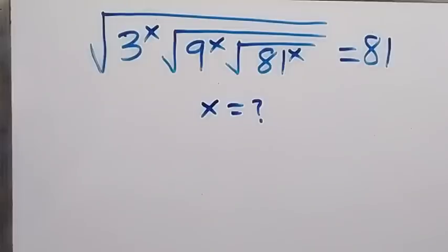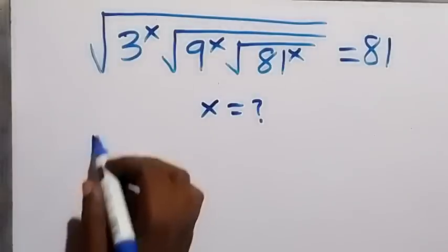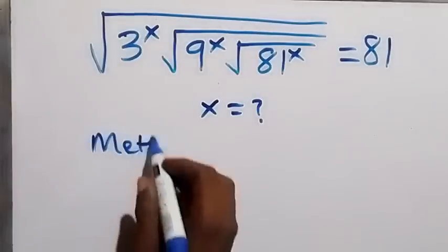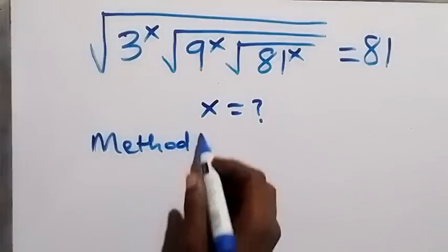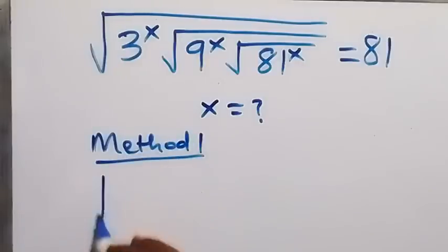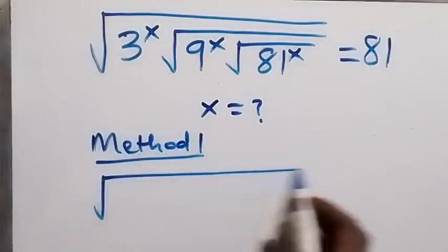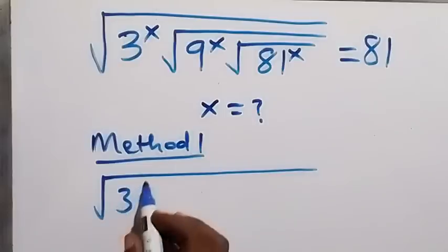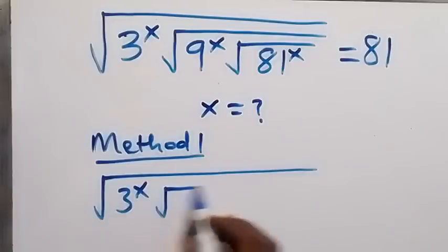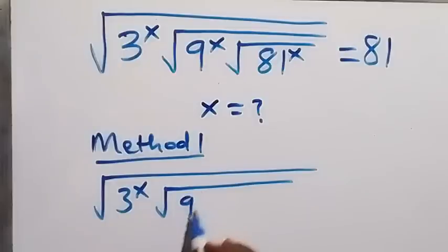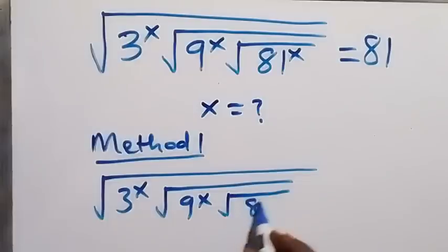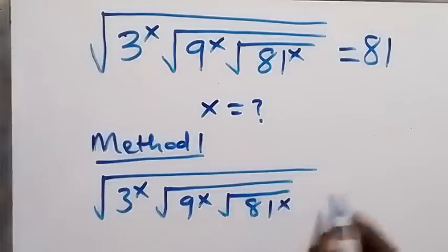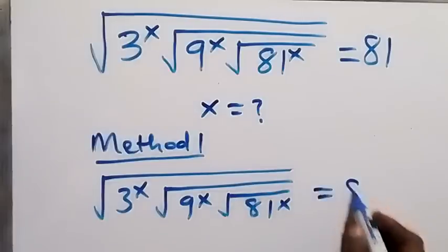Hello, you are welcome. How to solve this nice algebra equation finding the value of x. We are given: square root of 3 raised to power x, inside that square root of 9 raised to power x, and again square root of 81 raised to power x, and this equals 81.